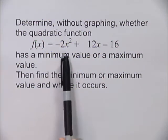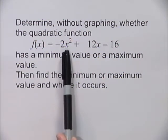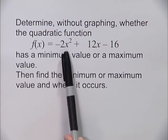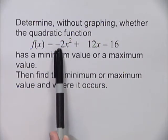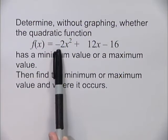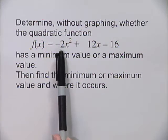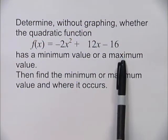We see that this is a quadratic function, and we look at the -2x² term. Because the coefficient of the x² term is negative, that tells us this would be a parabola opening down, which means it has a maximum value.